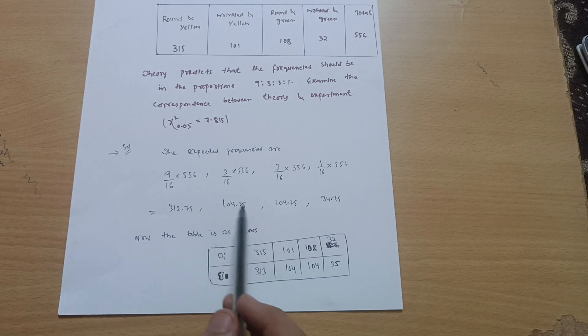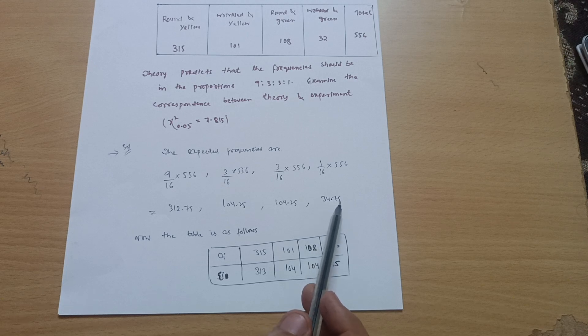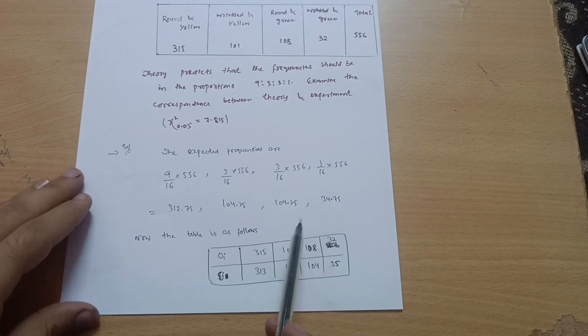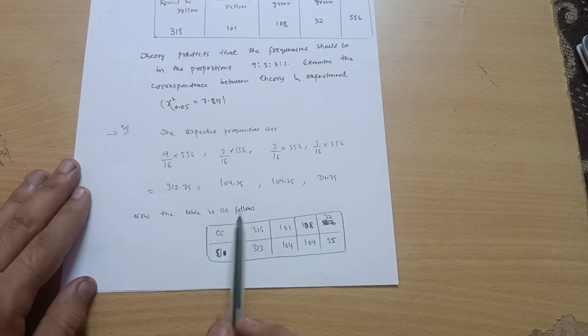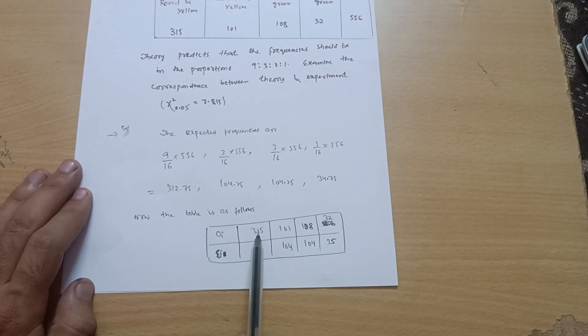Take the value 312.75, it is approximately equal to 313, and this is 104, 104, and 34.75 is approximately equal to 35, so that the calculations will be easy. Now the table is as follows.